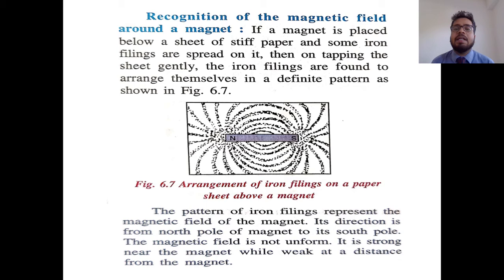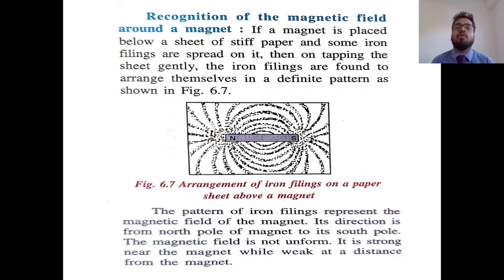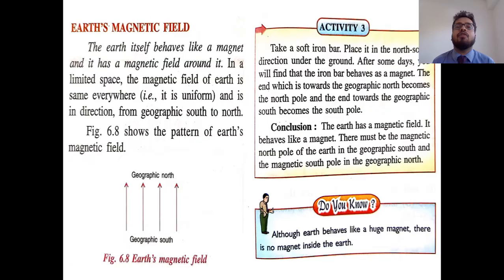The pattern of the iron filings represents the magnetic field of the magnet. Its direction is from the north pole to the south pole — you can see curved lines starting from the north pole and ending at the south pole. The magnetic field is not uniform throughout; it is strong near the magnet and weak at a distance. The more closely you bring a magnetic substance towards a magnet, the more attraction is experienced, and the farther you take it, the less attraction force is felt.